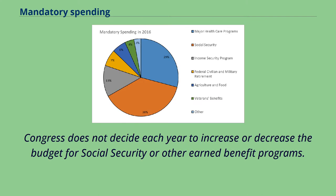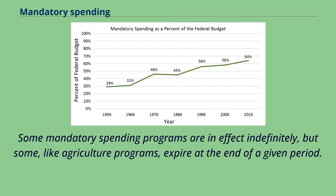Congress does not decide each year to increase or decrease the budget for Social Security or other earned benefit programs. Some mandatory spending programs are in effect indefinitely, but some, like agriculture programs, expire at the end of a given period.